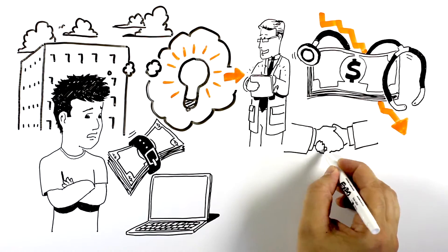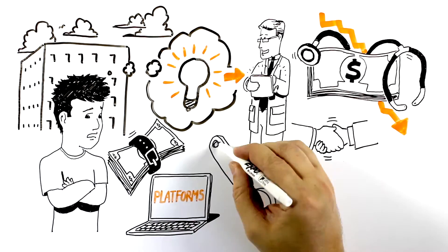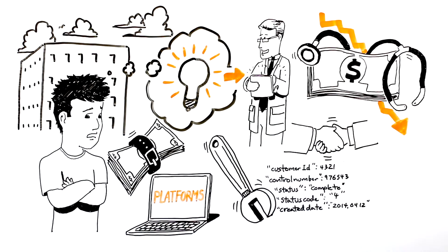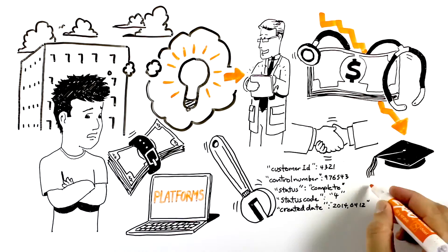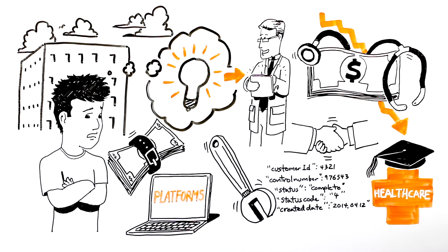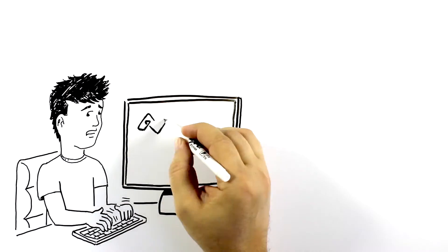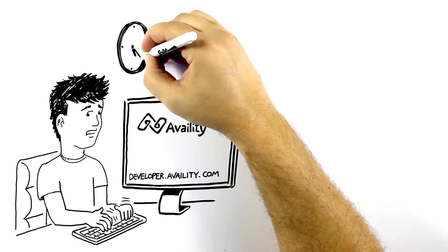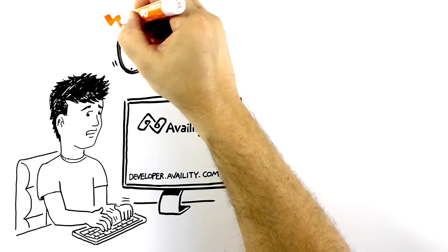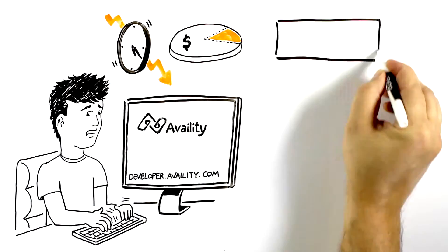He needs to find the right partner, platforms, tools, and data to help him meet his goals without breaking his budget or requiring him to get a PhD in healthcare. Josh's mission feels daunting, but it doesn't have to. Availity APIs can help Josh deliver great solutions in a fraction of the time and at a fraction of the cost.